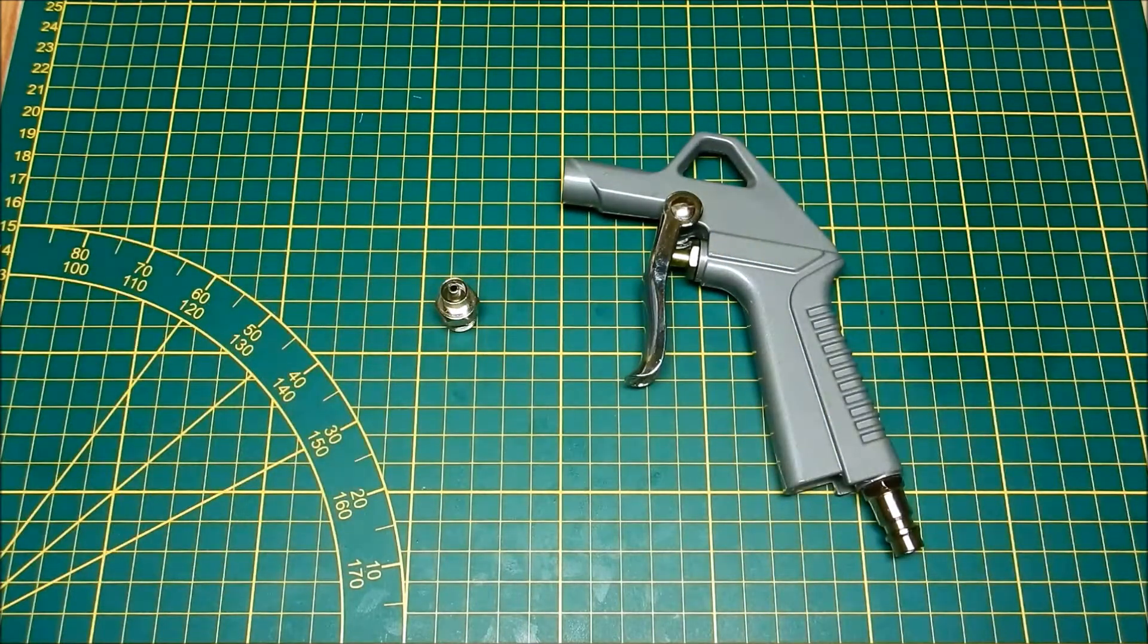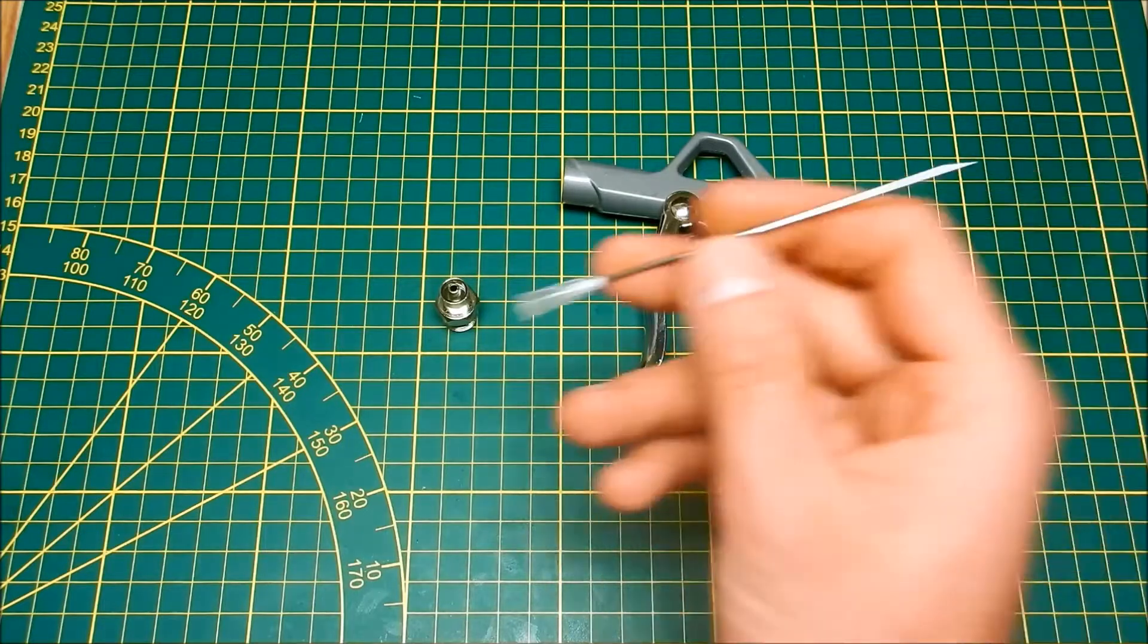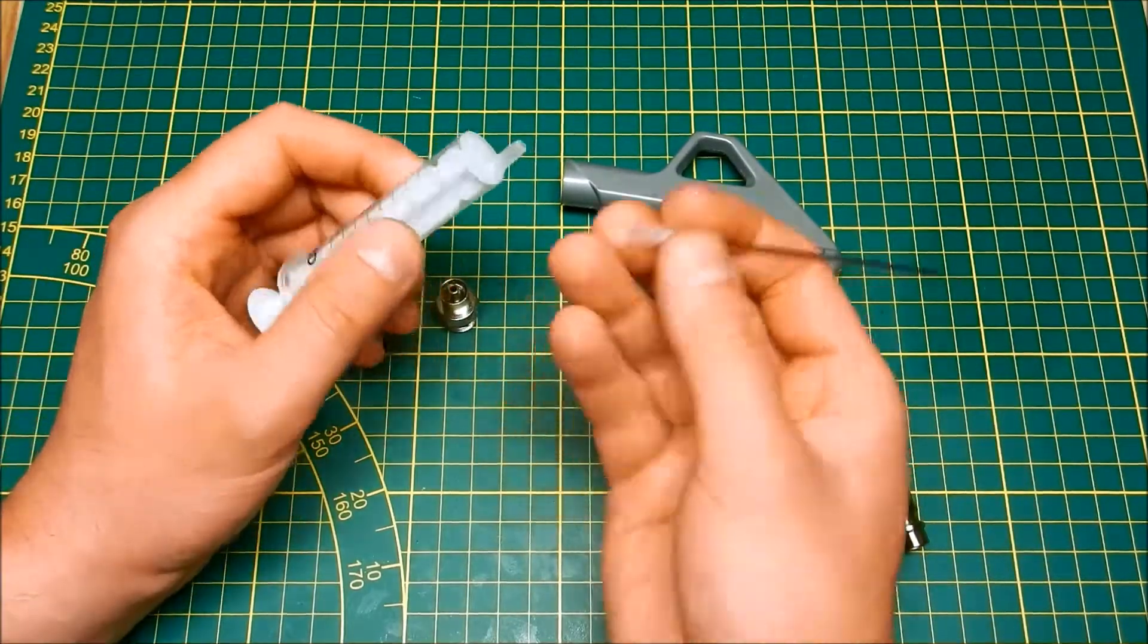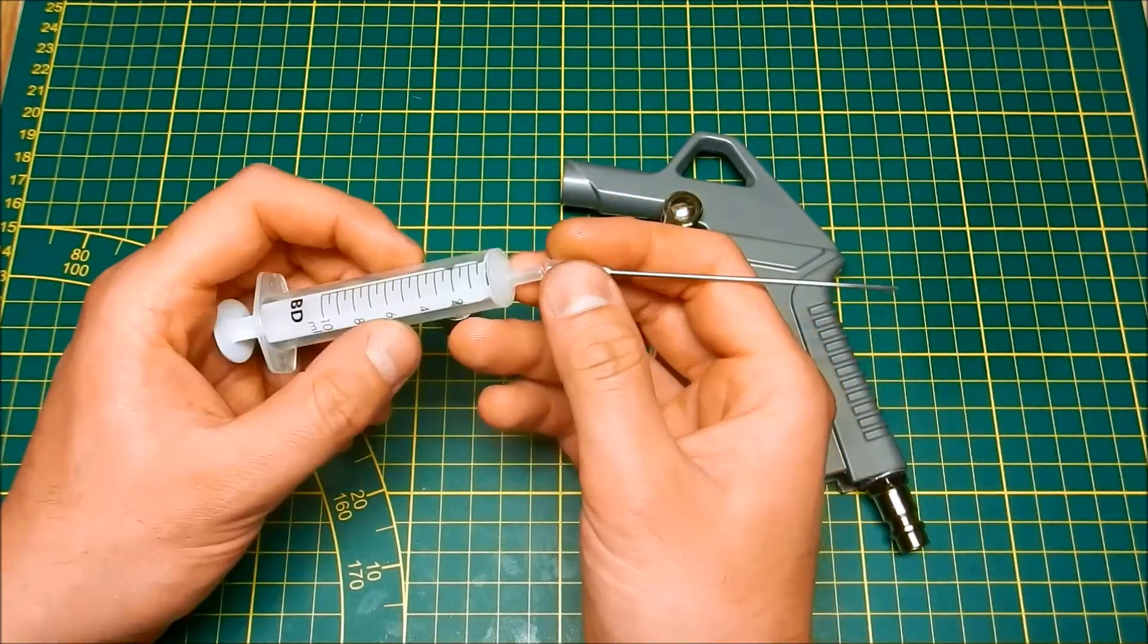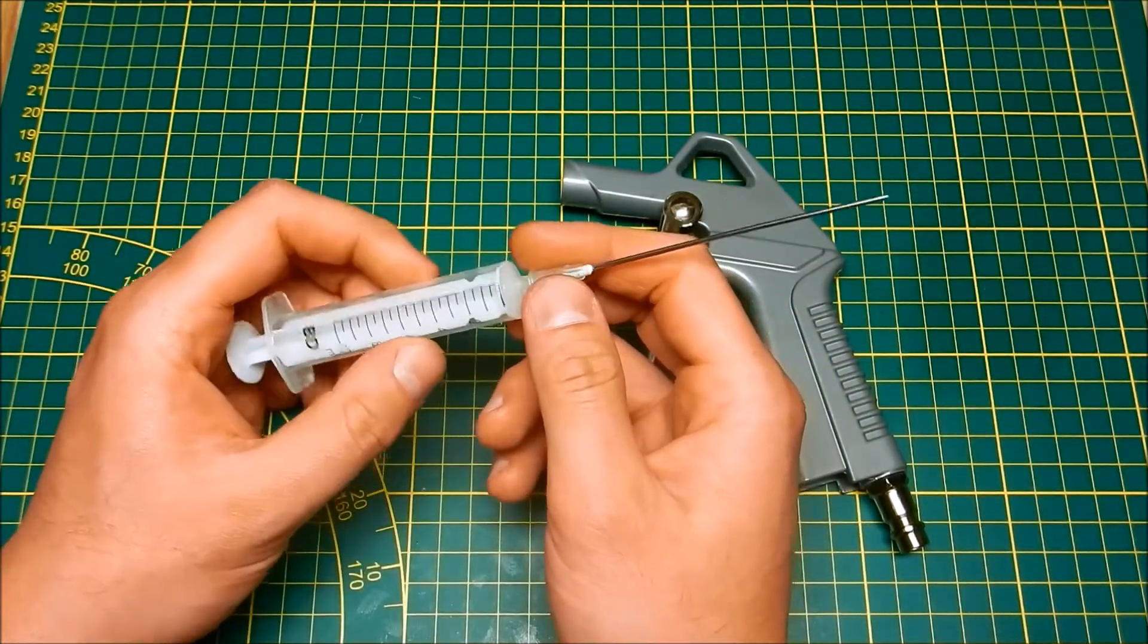You're most probably familiar with a luer taper connector. It's used for connecting a hypodermic needle to a syringe. Being a tapered connection, it seals pretty well, but it's also not suitable for higher pressures, such as shop air.